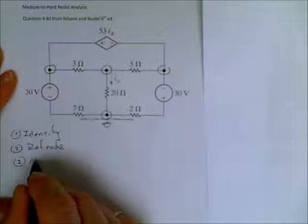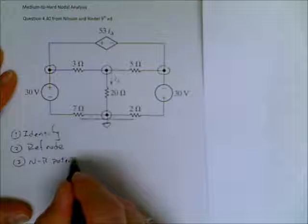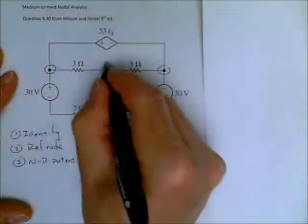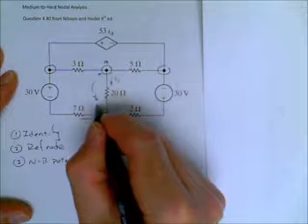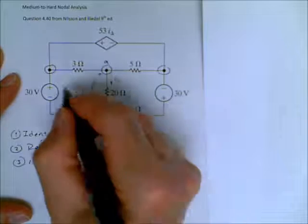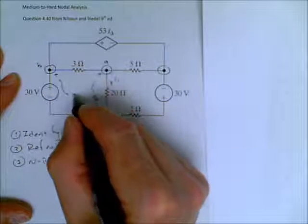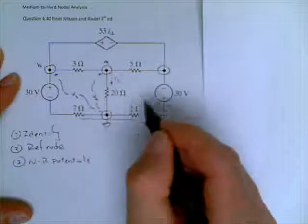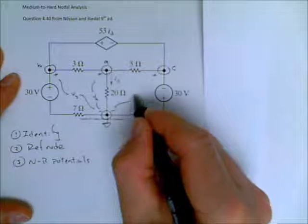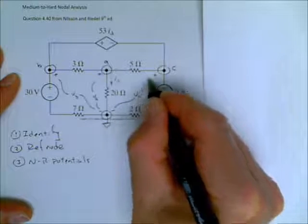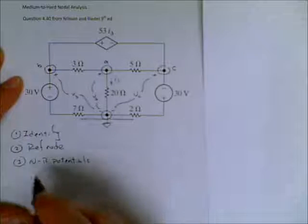Number three, node to reference potentials. I'm going to call this A. Therefore, this is VA. I'm going to call this B. I'm going to call this C plus minus VC. All right. So, we've defined all our node to reference potentials.